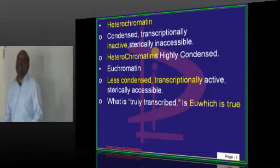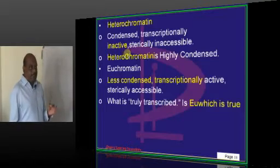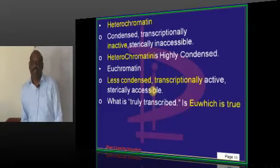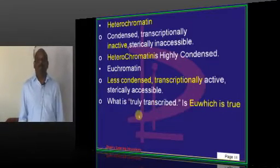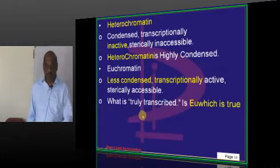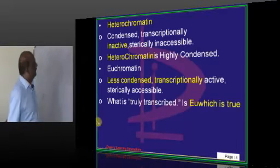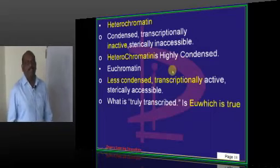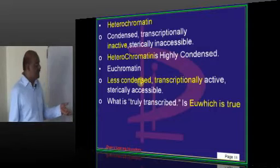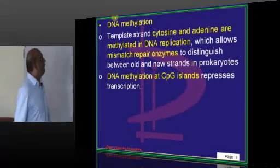There are two types of chromatin: heterochromatin and euchromatin. Heterochromatin is condensed, transcriptionally inactive, and sterically inaccessible. Euchromatin — 'eu' meaning true — is the DNA which is truly and transcriptionally active.